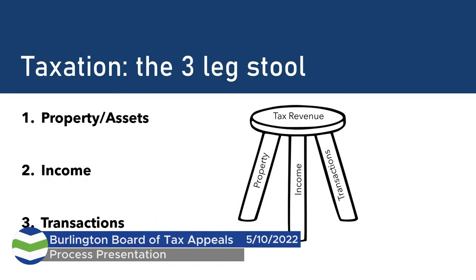Looking at the very big picture: taxation generally has an analogy of the three-legged stool. You have property and assets, income, and transactions. Income is the income tax and various things tied to income. Transactions are everything from sales taxes to rooms taxes and property transfer taxes. And then the government gets a lot of money from the property leg of the stool. In Vermont, that's typically real estate and business personal property.